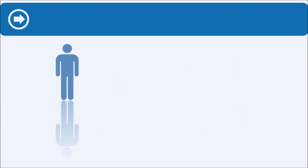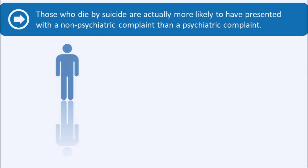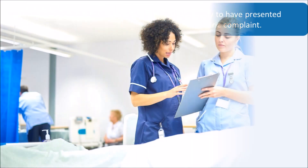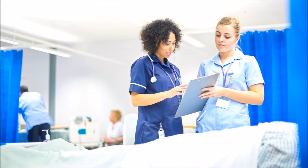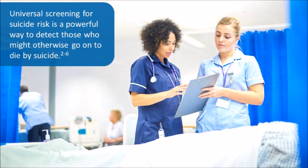Detecting suicide risk in patients before the patient acts is an essential component of prevention. Up to one in five people who die by suicide visited an ED in the four weeks prior to their death. For ED patients who go on to die by suicide, often the presenting complaint is not suicide related. Those who die by suicide are actually more likely to have presented in the ED with a non-psychiatric complaint than a psychiatric complaint. Screening is a routine part of clinical care and universal screening for suicide risk is a powerful way to detect those who might otherwise go on to die by suicide.